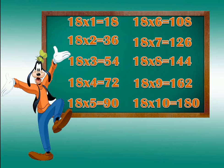18 ones are 18. 18 twos are 36. 18 threes are 54. 18 fours are 72. 18 fives are 90.